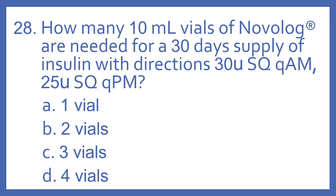Number 28. How many 10 ml vials of Novolog are needed for a 30-day supply of insulin with directions: 30 U SQ QAM, 25 U SQ QPM? A) 1 vial, B) 2 vials, C) 3 vials, or D) 4 vials?